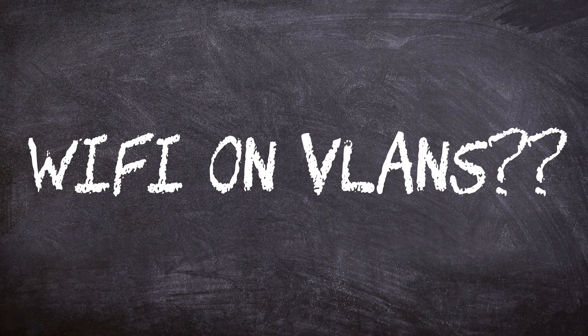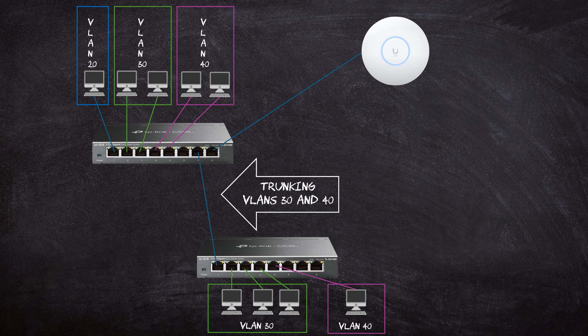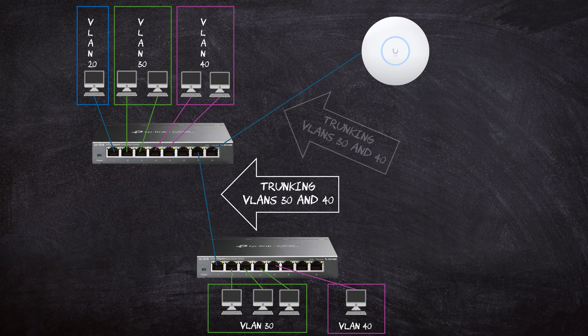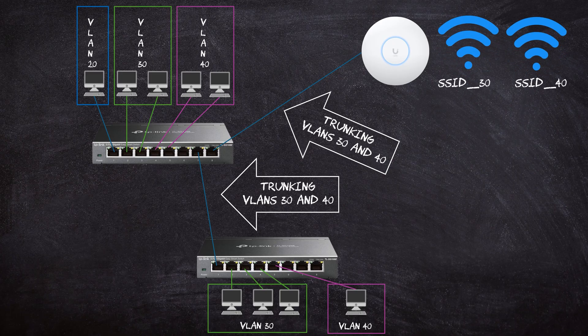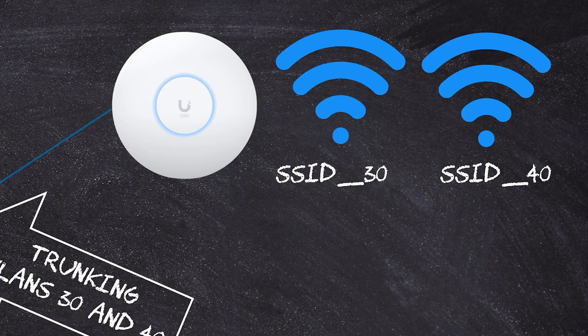Would this also work with Wi-Fi? Absolutely. Trunking is also used when you want to add Wi-Fi devices to particular VLANs, and for that we need an access point with VLAN support. We connect the Wi-Fi access point to the switch and configure the switch port as a trunk port, allowing multiple VLAN traffic — in this case VLANs 30 and 40 — to flow through it. Then we configure the access point with the VLAN IDs, assigning them by creating one SSID per VLAN.